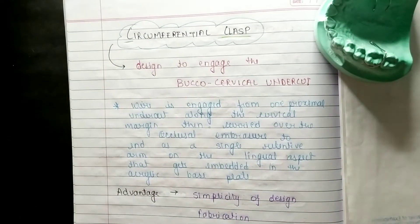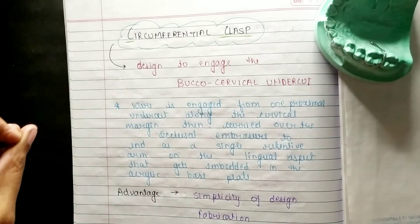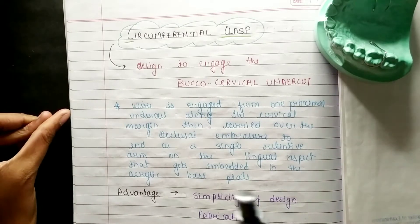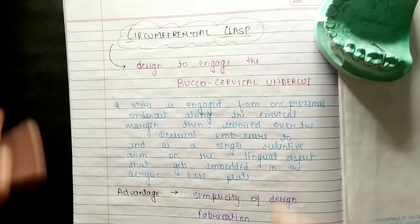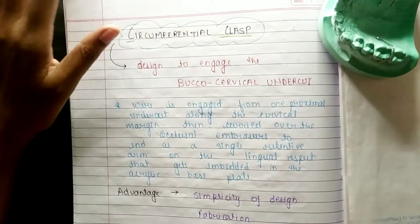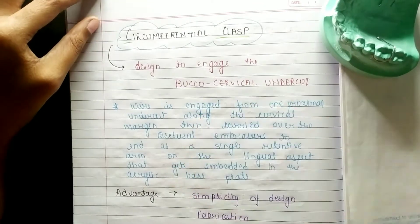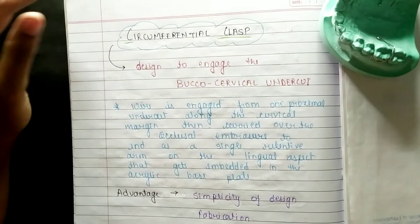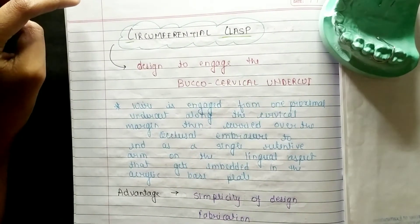Hello everyone, welcome to SAM — the Study Art Motivation and Education channel. In this video we are going to discuss the circumferential clasp, also known as the C clasp. We are going to study about the C clasp. First, regarding undercuts in mode of action — it is used in buccal and cervical undercuts.